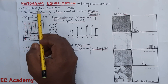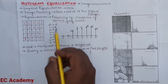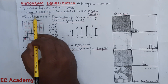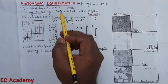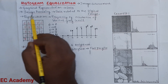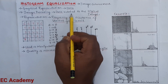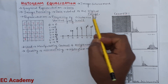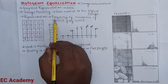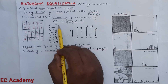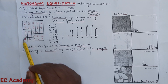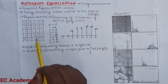In this lecture, let us understand Histogram Equalization. Histogram equalization is used for image enhancement. A histogram is the graphical representation of any data, and in image processing it represents the relative frequency of occurrence of the various gray levels — that is, how many times each gray level value has occurred in a given digital image.